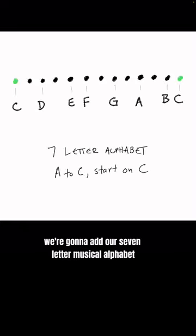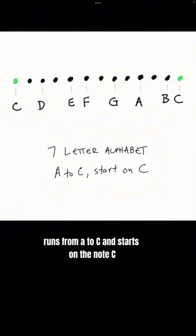On top of this, we're going to add our seven letter musical alphabet, which runs from A to G and starts on the note C. Right away, you'll notice there are some different distances in between the notes.